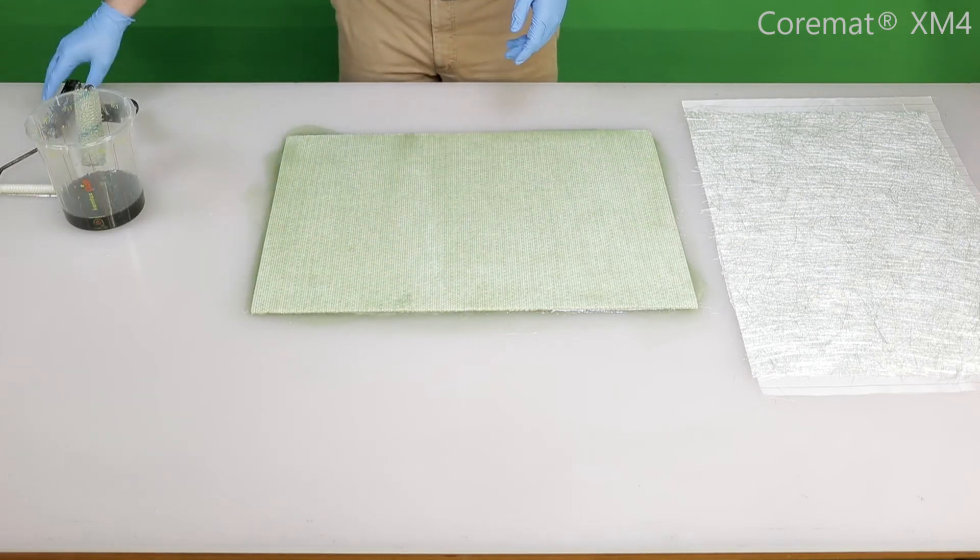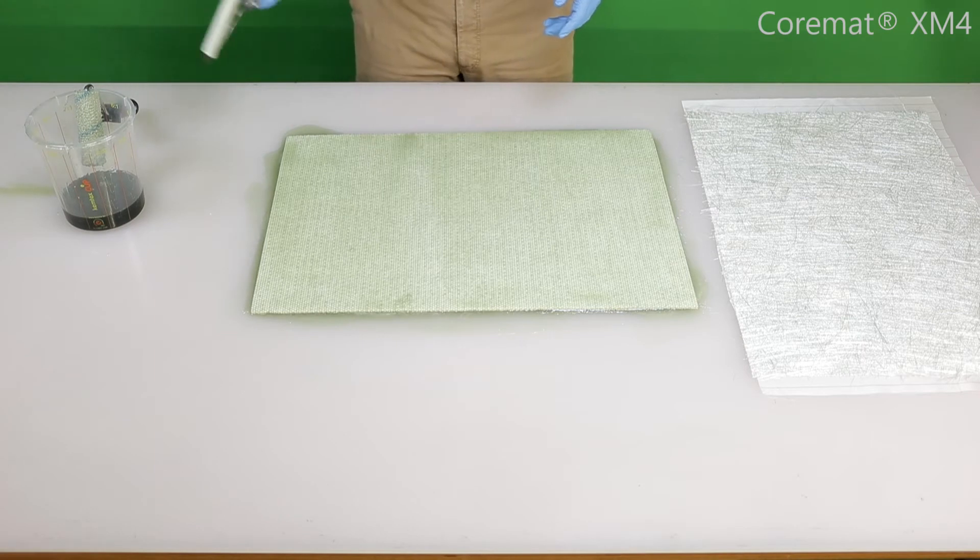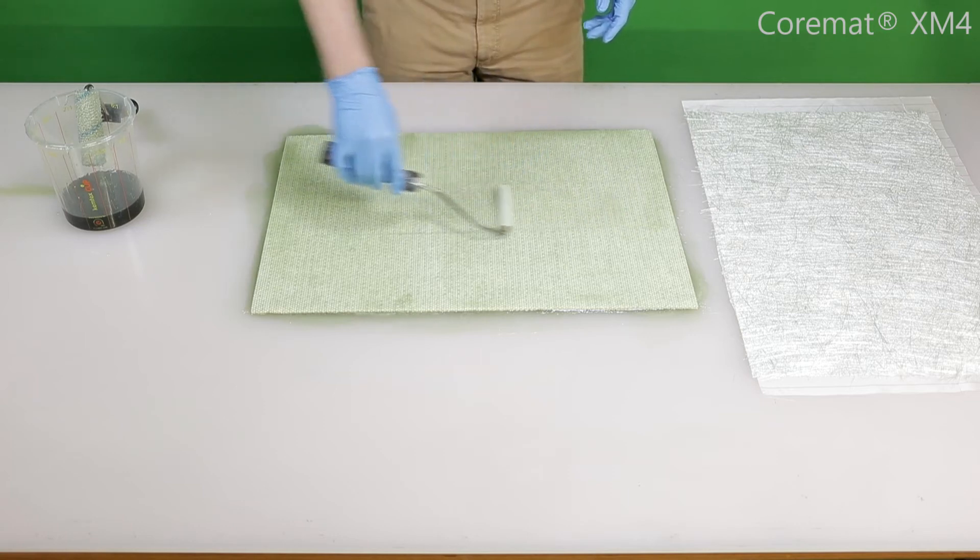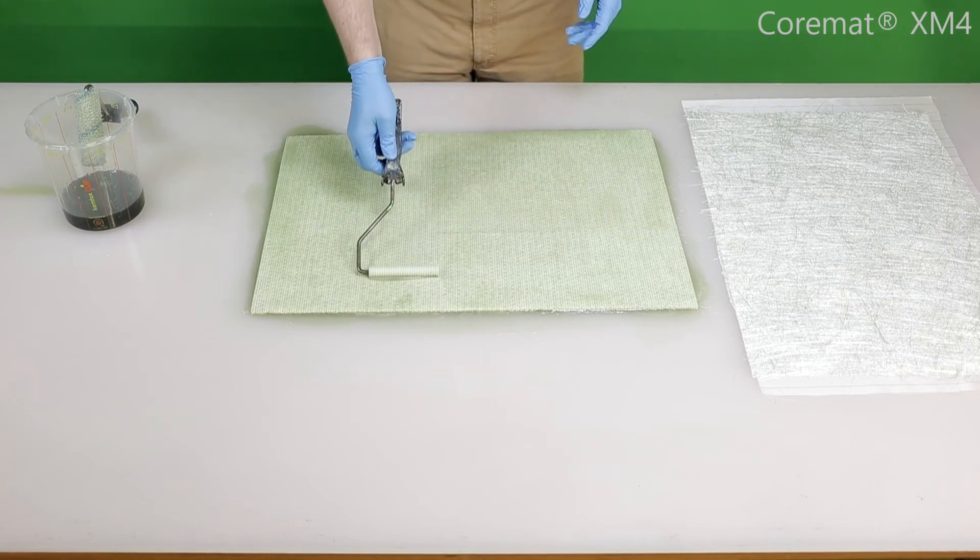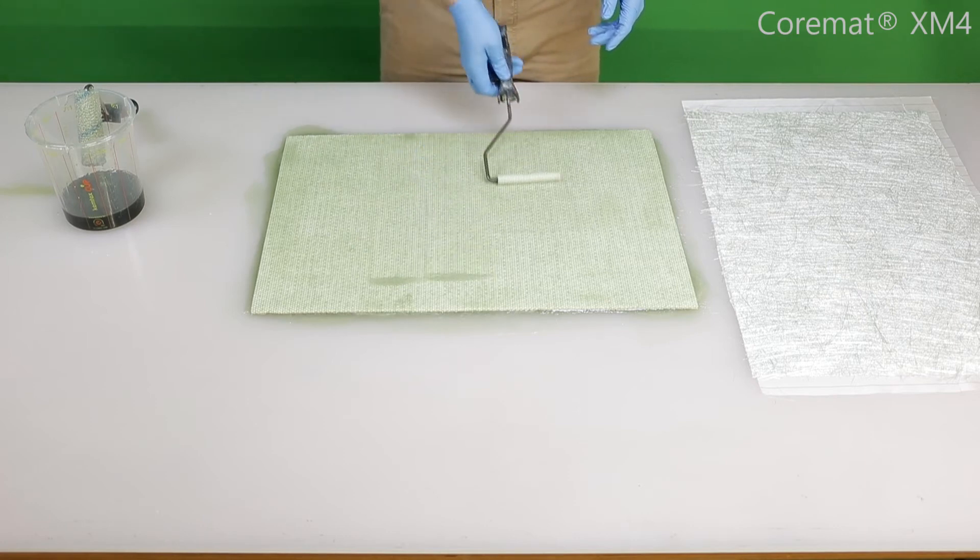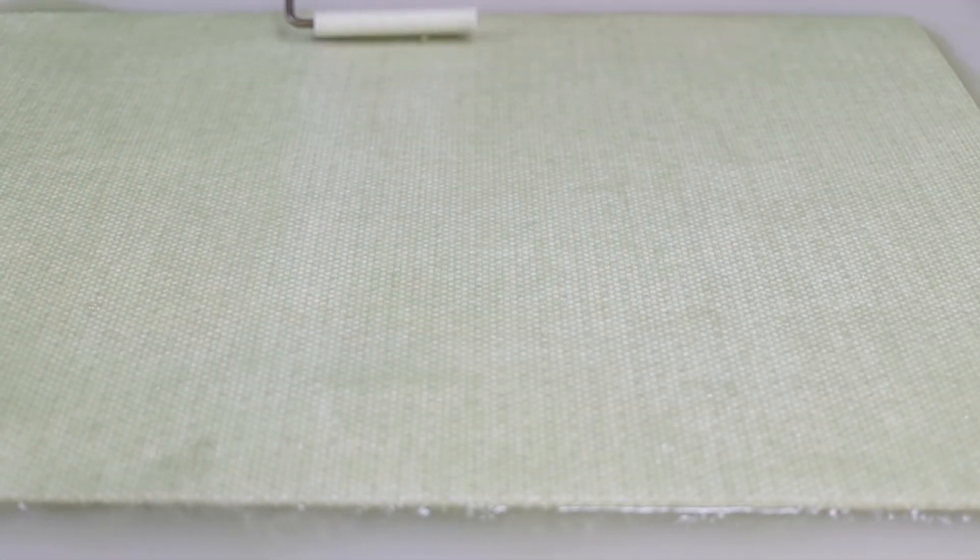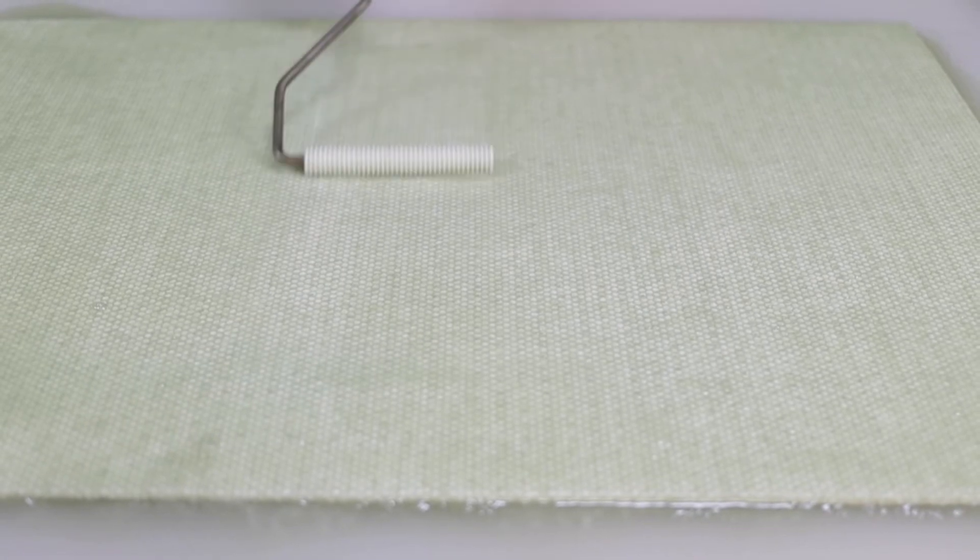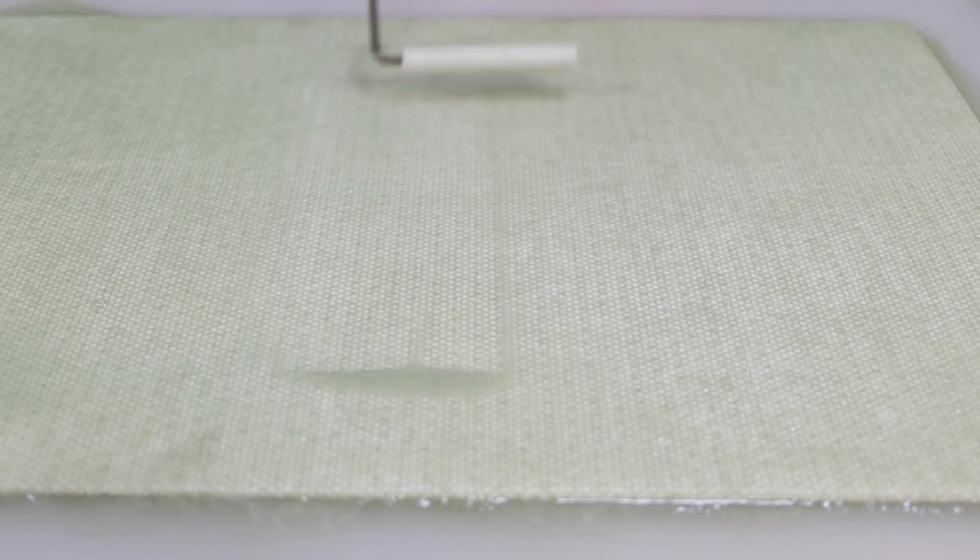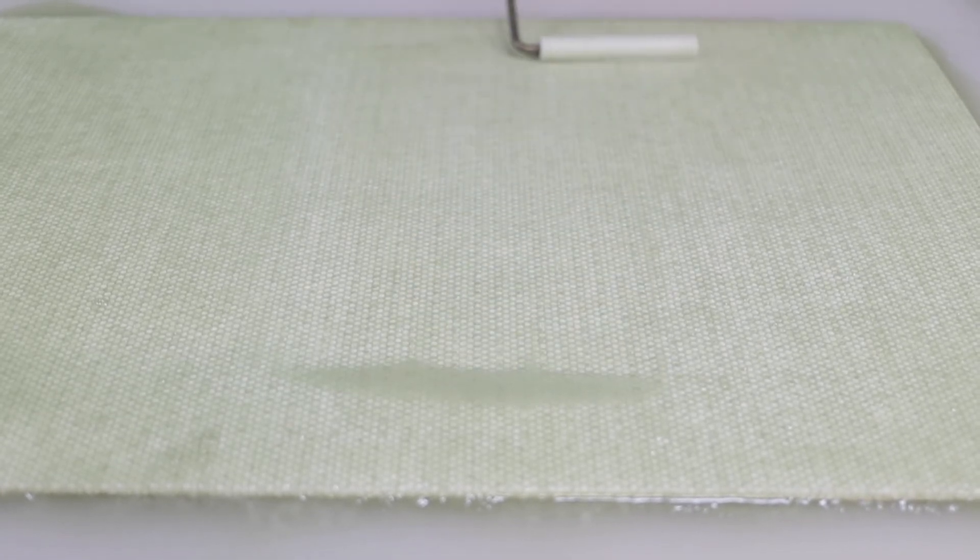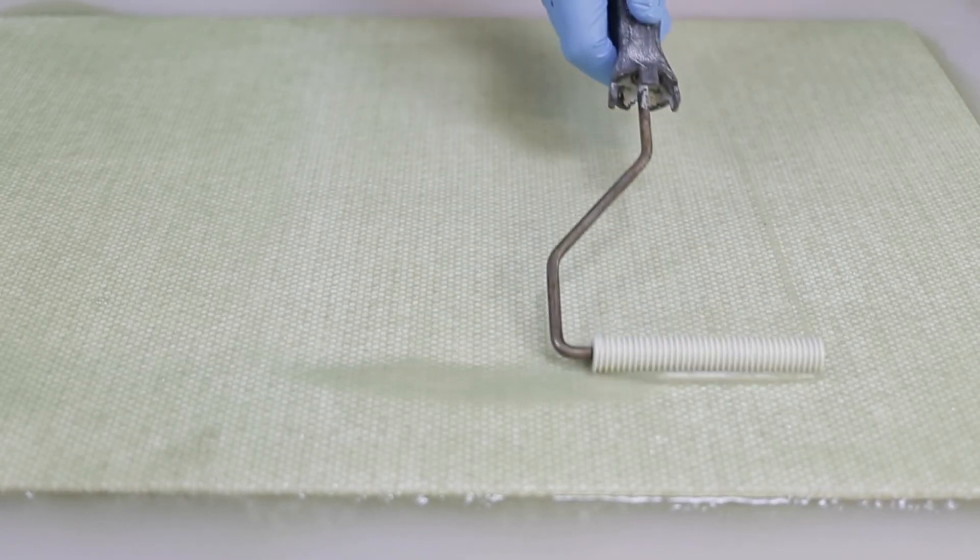Now that we are confident enough resin is applied, we can check the saturation level using our roller. When we move our roller over the Cormat, again without using force or pressure, there should be a small front of resin being pushed by the roller. When this is the case all over the ply, we are done laminating Cormat.